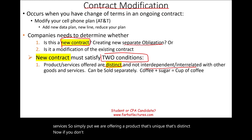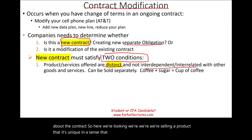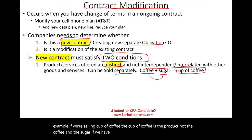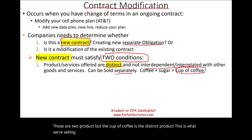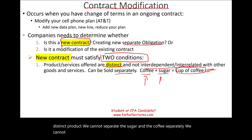If you're unsure what distinct or interdependent means, please refer to the prior session on contracts. We're looking at a product that can be sold separately. For example, if we're selling a cup of coffee, that cup of coffee is the distinct product — not the coffee and the sugar separately. A cup of coffee is its own distinct product and is not interdependent with anything else.